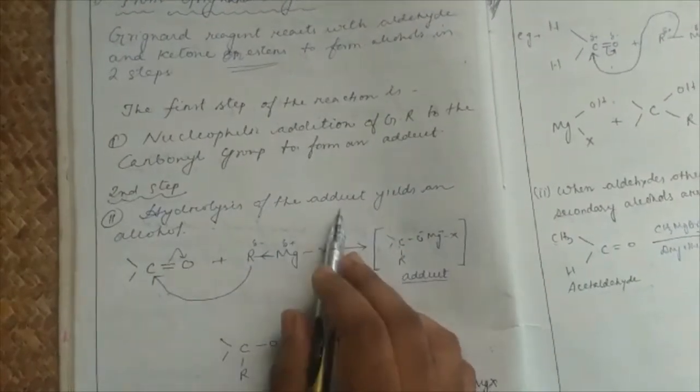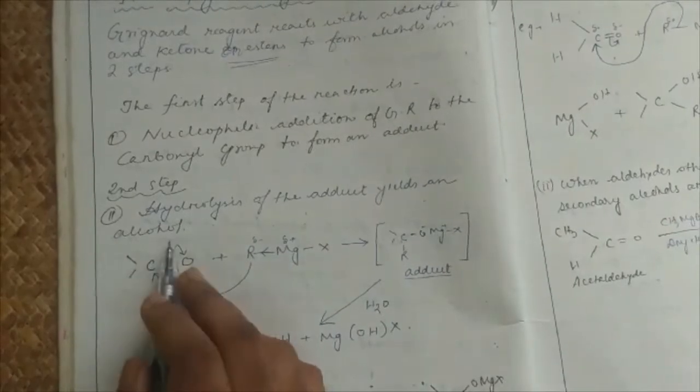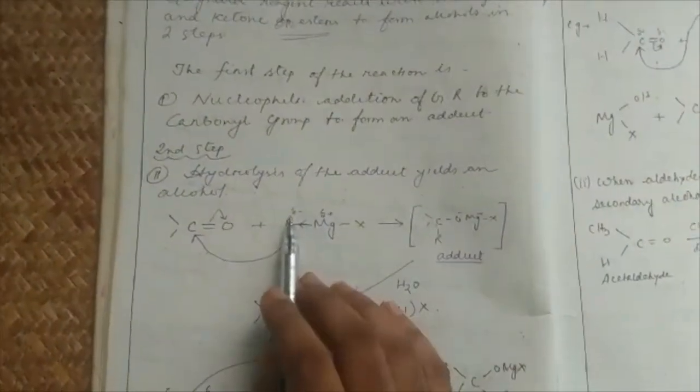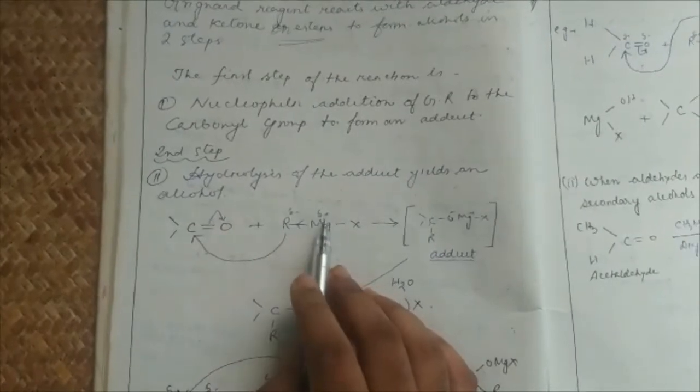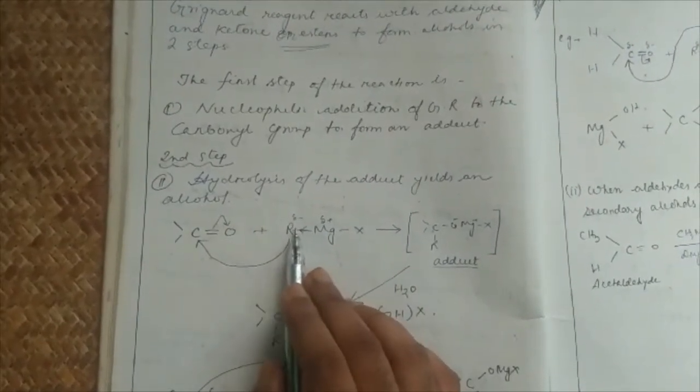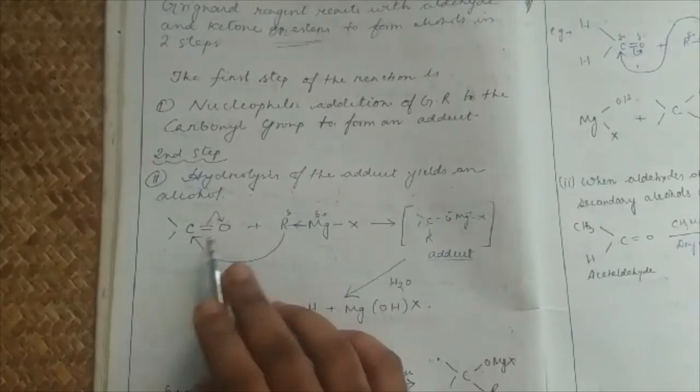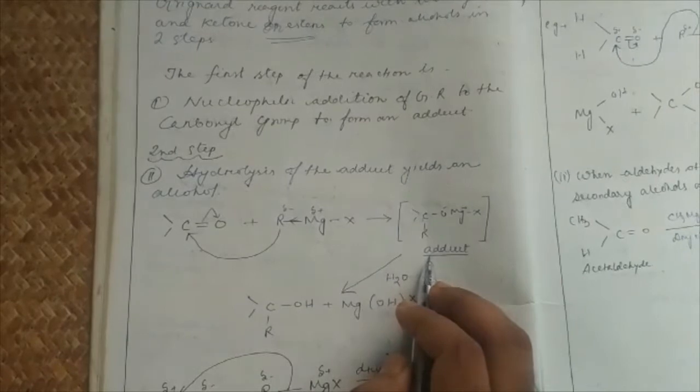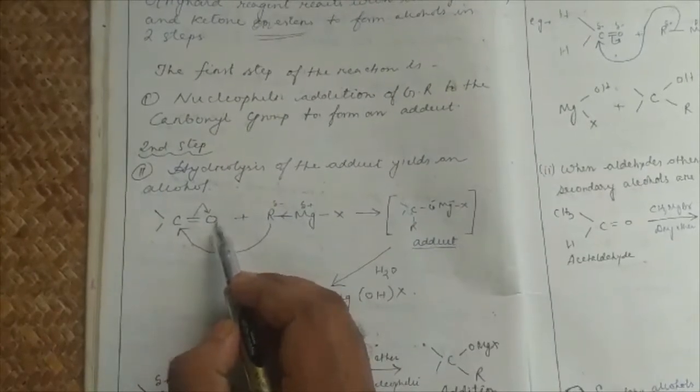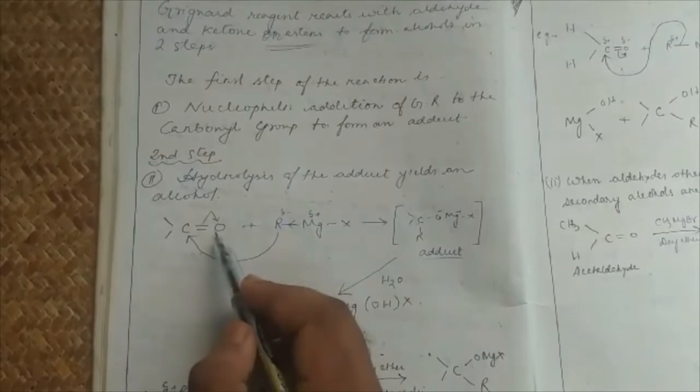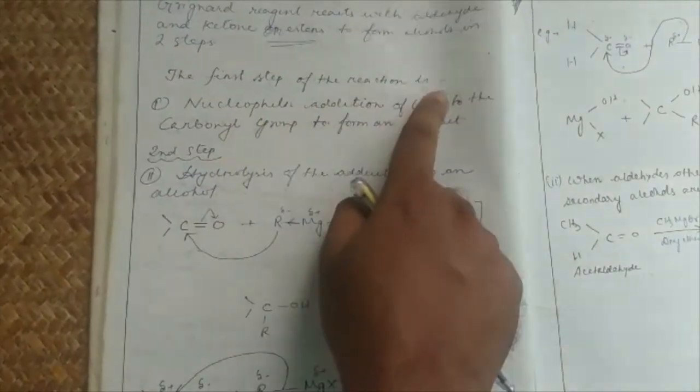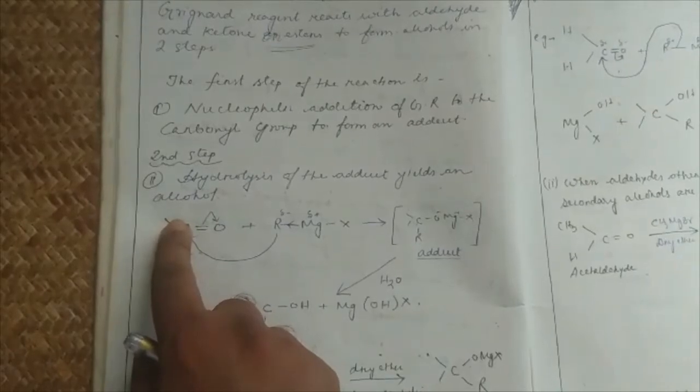The Grignard reagent is RMgX, magnesium metal delta positive, alkyl group negative charge, partial negative charge, partial positive charge. This reaction is nucleophilic addition to carbonyl compound. This reaction is very simple, this is negative charge, carbon and oxygen are highly negative, so what do you need to do with carbon? This is the first step, nucleophilic addition to carbonyl group to form adduct.